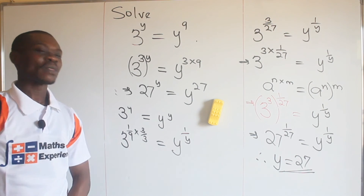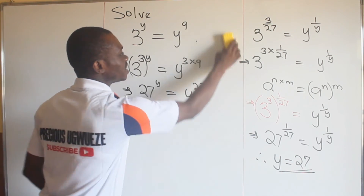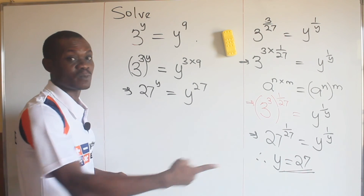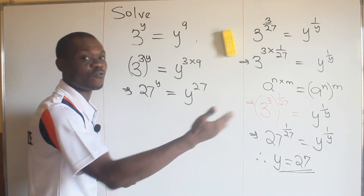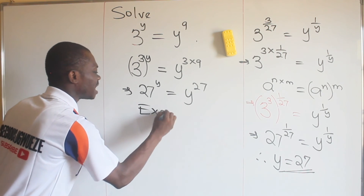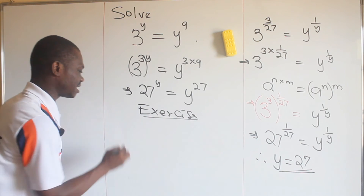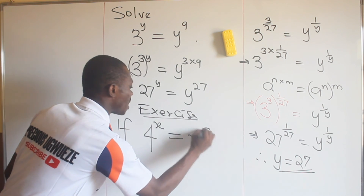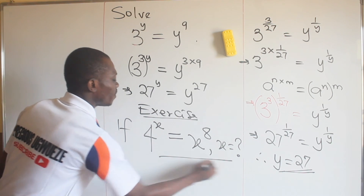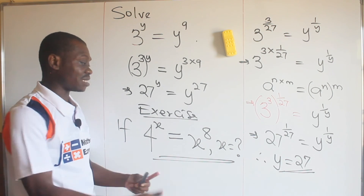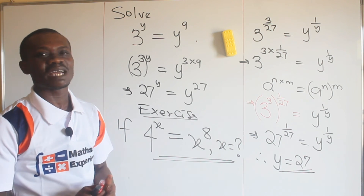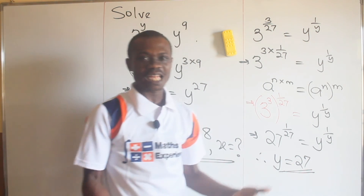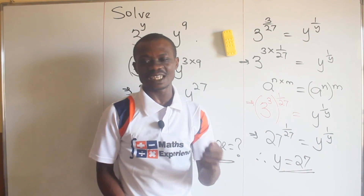Knowing why something is done in solving a math problem is more important than just how it was solved, because it helps you solve further problems. So here is an exercise: if 4 raised to the power of x is equal to x raised to the power of 8, what is the value of x? Comment your answer below, subscribe to our YouTube channel, and support this channel through our membership platform. See you in the next video, bye!